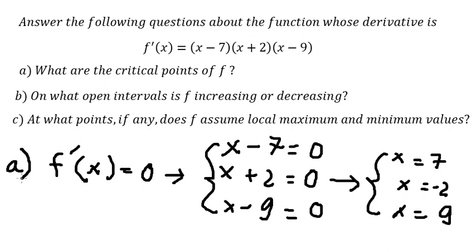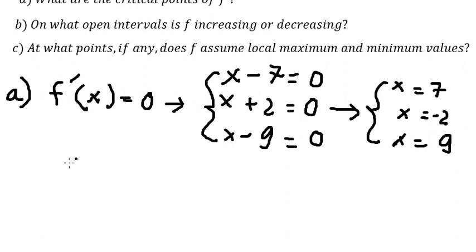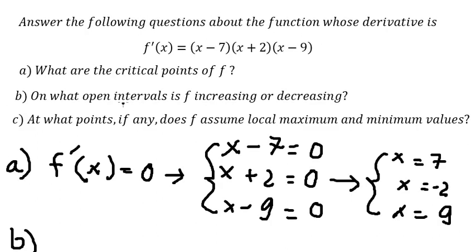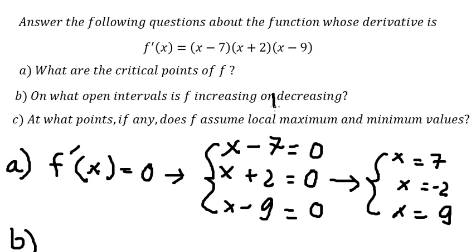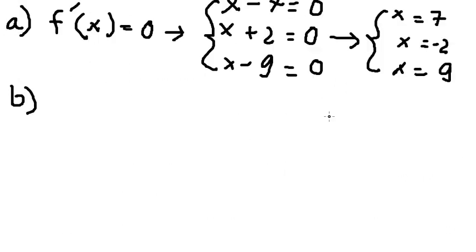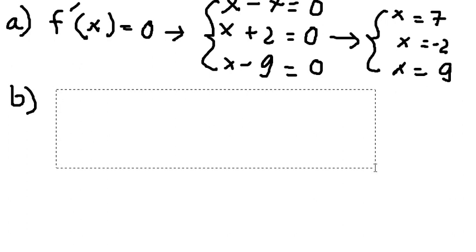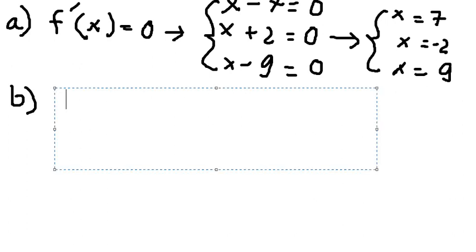So s equals seven, s equals negative two, and s equals nine — that is the answer for question A. For question B, we want to find the open intervals to determine where the function is increasing or decreasing. To answer this, we need to draw a variation table.